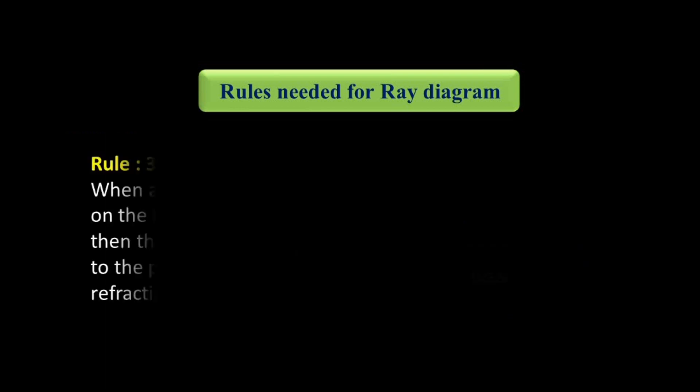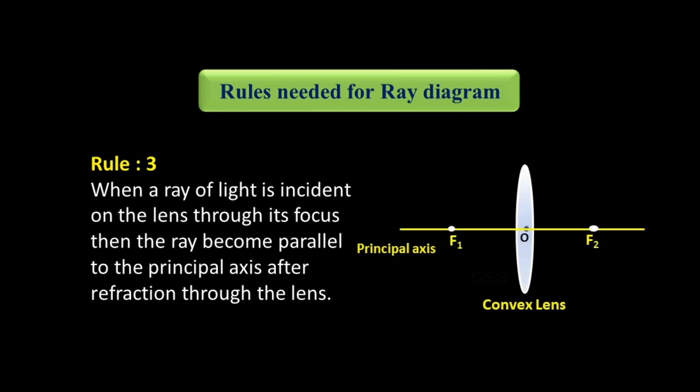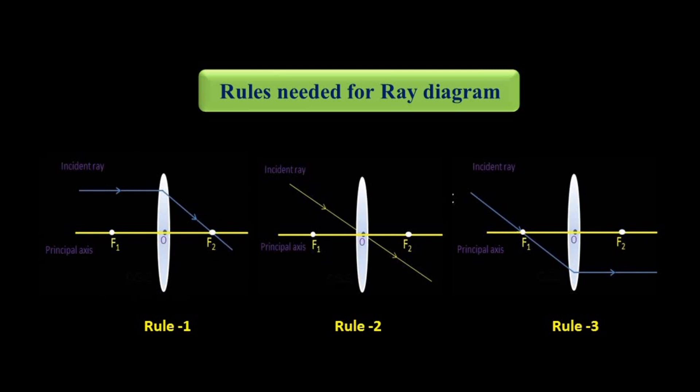Rule number three: when a ray of light is incident on the lens through its focus, then the ray becomes parallel to the principal axis after refraction through the lens. The incident ray passes through focus F1, and after refraction the refracted rays become parallel to the principal axis. Note that Rule 3 is exactly opposite to Rule 1.